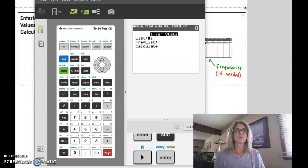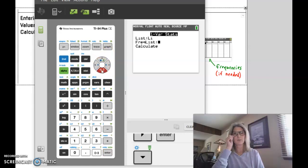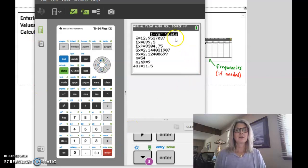I want the one variable statistics, and all my data is in list one. The frequency is a multiplier. We don't want to multiply any of our data. So I'm going to just highlight calculate and then enter. Here is the one variable statistics, and you'll see your S, that's your sample standard deviation, and you'll see your sigma, which is your population standard deviation.